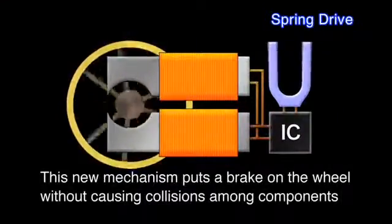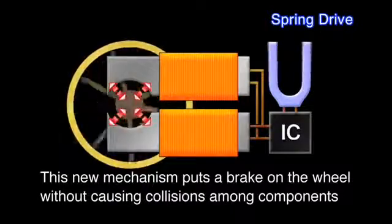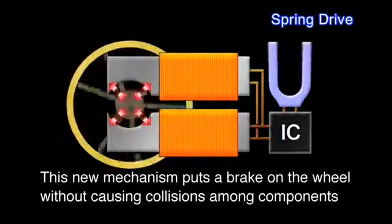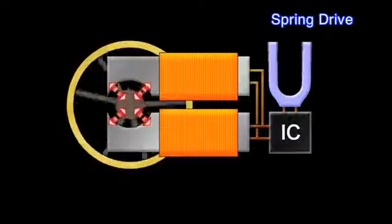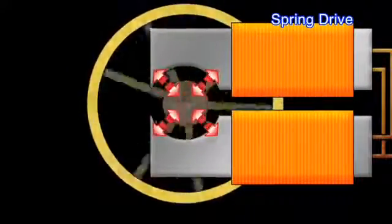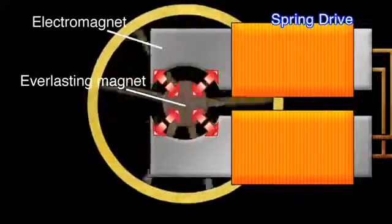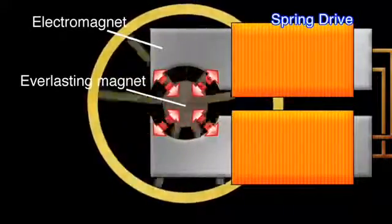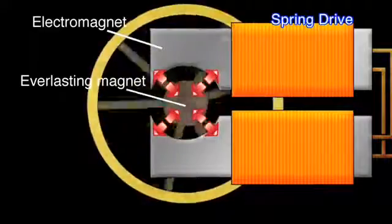This new mechanism puts a brake on the wheel without causing collisions among components. By using the magnetic force against each other as resistance in order to put an electromagnetic brake on the wheel, this new mechanism could be realized.